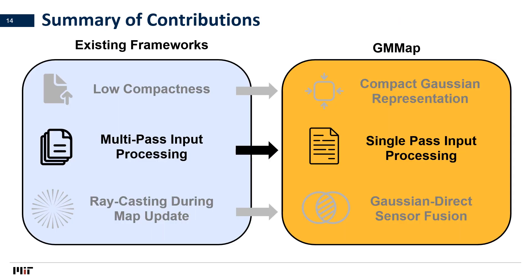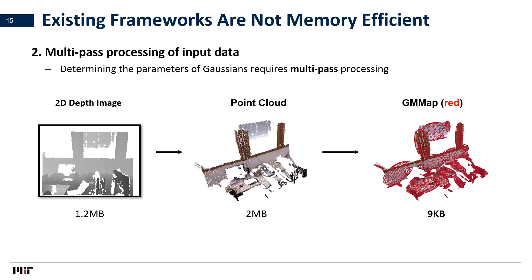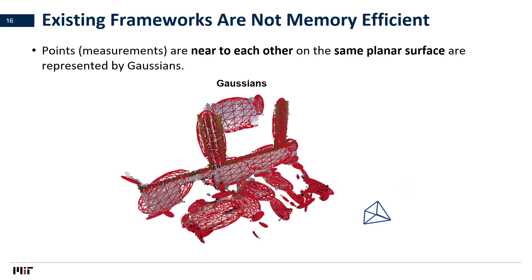Next, we discuss how we can efficiently construct these Gaussians using our single-path algorithm compared with prior multipath approaches. Even though Gaussians are very compact, determining their optimal set of parameters is not an easy task. Due to Gaussians' flexibility for representation, one can imagine many viable ways to place the ellipsoids for a given example. To accurately represent point clouds using Gaussians, each Gaussian should represent one part of a planar continuous surface. Thus, it is really important for the algorithm to find which subset of measurements in 3D space are near each other on the same surface.